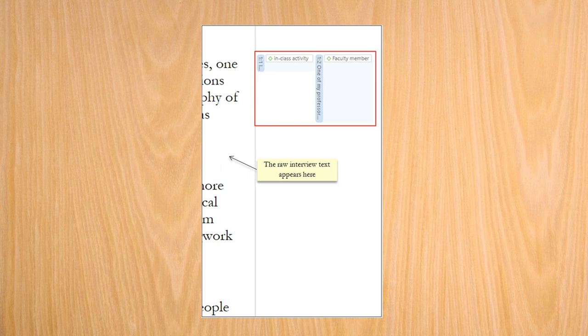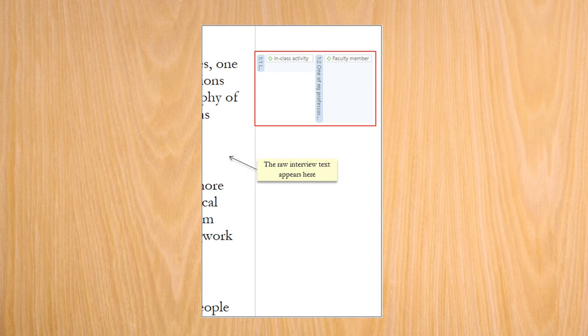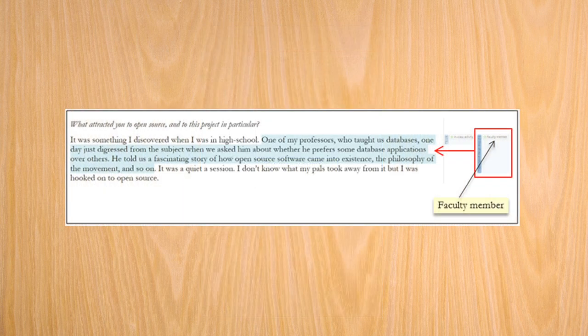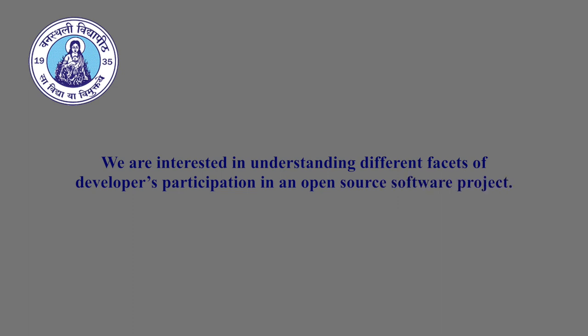Now, in the right hand panel, you can see that the codes have started appearing as and when we are creating them. If you hover the cursor over these, you can even see the corresponding text snippets. Having created two codes, let us pause for a moment. What is our research objective? We are interested in understanding different facets of developers participation in an open source software project. What do the two codes which we have just created tell us about it? To me, it seems that the two codes relate to the specific circumstances under which the developer was introduced to the phenomena of open source software. In other words, the two codes represent the trigger that set the respondent on to their journey in the world of open source. Thus, one can argue that these two codes are related to each other as they are talking about similar things. Keep this important point about connection between codes in mind as we will come back to it later.